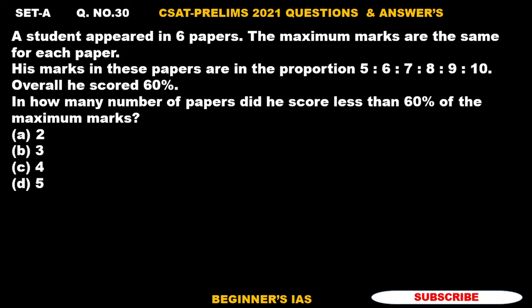Hello aspirants, welcome you all. Let us discuss question number 30. A student appeared in six papers. The maximum marks are the same for each paper. His marks in these papers are in the proportion 5:6:7:8:9:10. Overall he scored 60%.